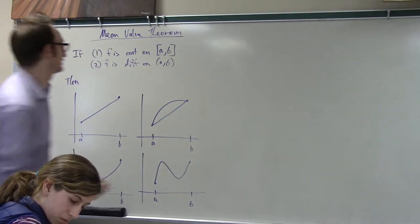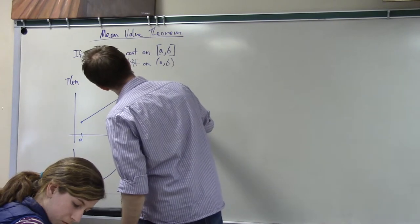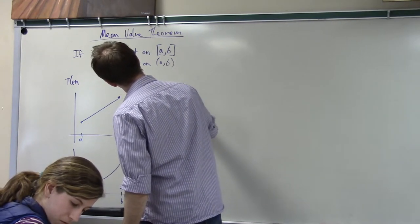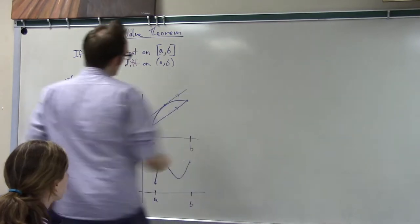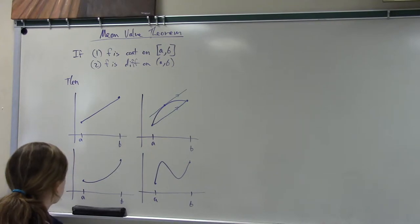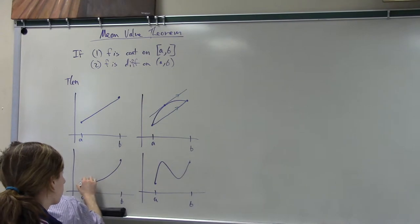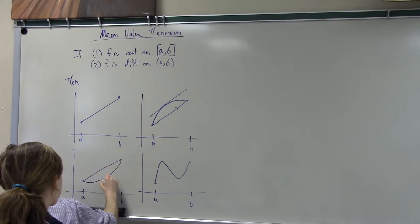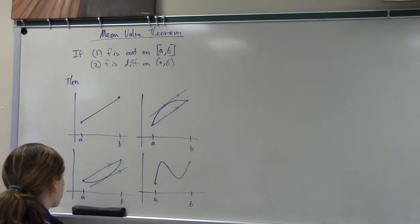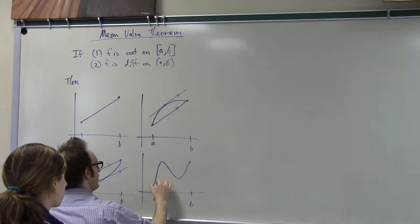Okay, somewhere on this interval, says the mean value theorem, there is a special point at which the slope of the tangent line is equal to the slope of the secant line. Make sense? The pictures are quite beautiful. Again, here, if I draw the secant line, there exists some point at which the slope of the secant line is equal to the slope of the tangent line.